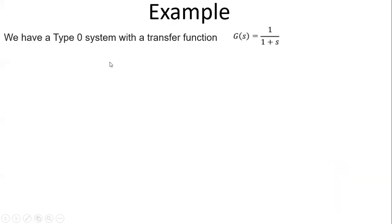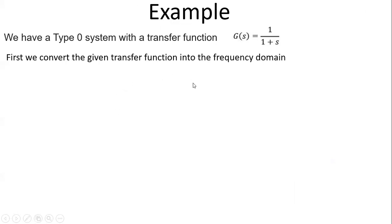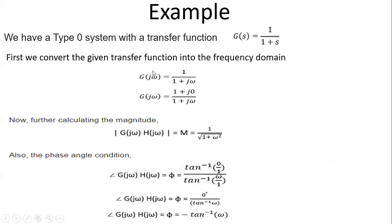Let's understand this with an example. We have a Type 0 system with transfer function G(s) = 1/(1+s). First we convert this into the frequency domain by substituting s = jω, giving G(jω) = 1/(1+jω), which can be written as (1+j0)/(1+jω). The magnitude of G(jω)·H(jω) is 1/√(1+ω²), since the numerator gives √(1²+0²) = 1 and the denominator gives √(1+ω²).